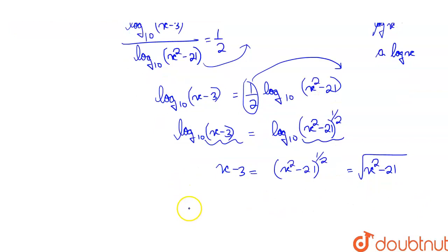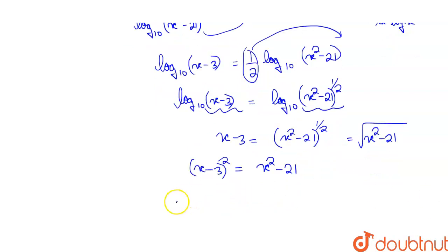Now what will we do? Squaring both sides. So x minus 3 squared equals x squared minus 21. So x squared plus 9 minus 6x equals x squared minus 21.